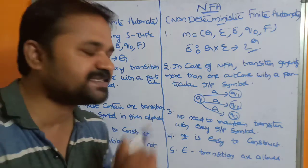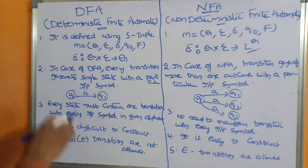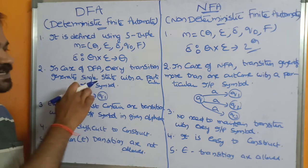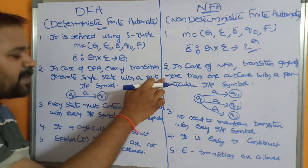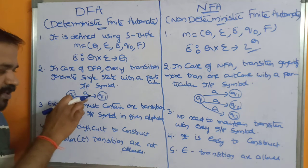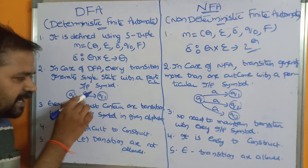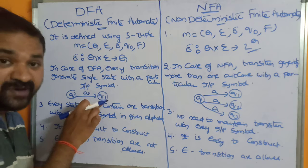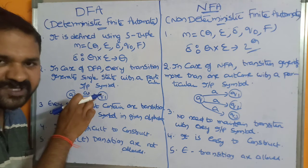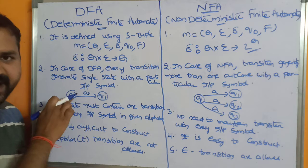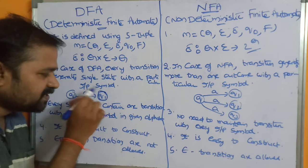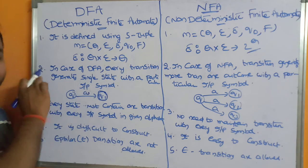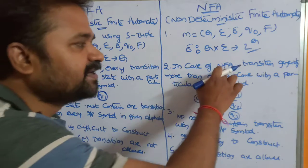Now let's see the second difference. In the case of DFA, every transition generates a single state with a particular input symbol. For example, if we apply input symbol 'a' on state Q, we move to state Q1. So whenever we apply an input symbol on a particular state, it generates only one state — there is only one transition, only one edge in DFA.